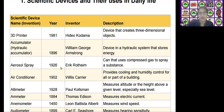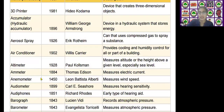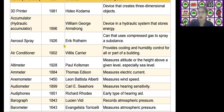The next scientific device is the air conditioner. It was invented by William Carrier in the year 1902. It provides cooling and humidity control for all or part of a building.